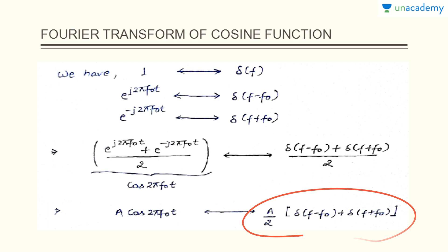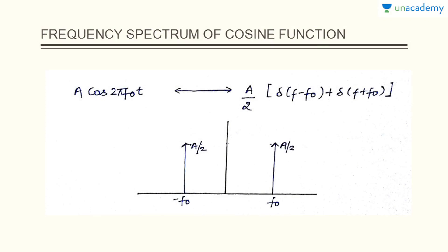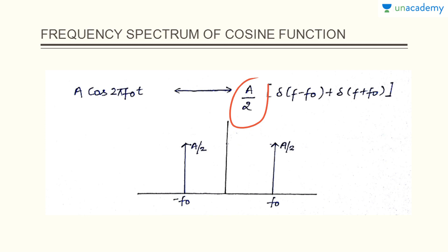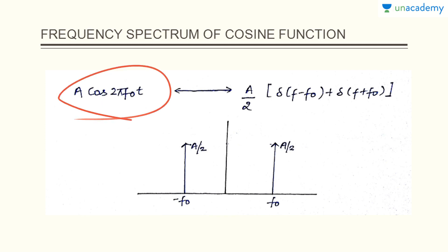Now let us plot this spectrum in the frequency domain. We have an impulse at f = f₀ and δ(f + f₀) represents an impulse at f = -f₀, with the amplitude of both impulses being a/2. To quickly draw the frequency spectrum of a cosine signal with frequency f₀ and amplitude a, just draw an impulse at f₀ and an impulse at -f₀, each with amplitude a/2. For example, to draw the spectrum of a·cos(2π(f₁ + f₂)t), draw impulses of magnitude a/2 at ±(f₁ + f₂).